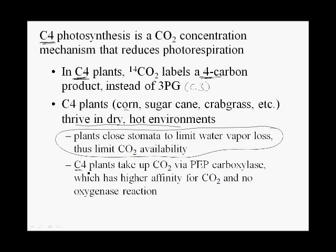What C4 plants do is they initially take up carbon dioxide by a different enzyme — not rubisco — but a different enzyme called PEP carboxylase. PEP stands for phosphoenol pyruvate; we'll just call it PEP. The enzyme that adds CO2 to PEP is called PEP carboxylase.